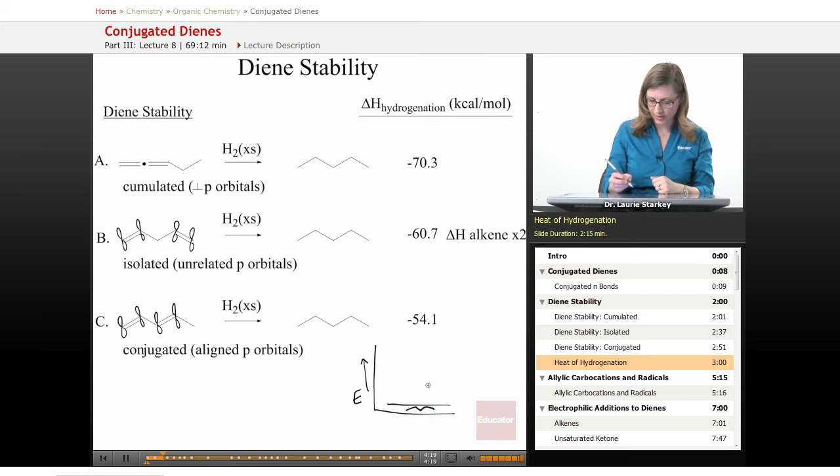But A must be starting at a higher energy than B, and C must be starting at a lower energy than B. C is the most stable diene because it has the smallest amount of energy to release upon hydrogenation.